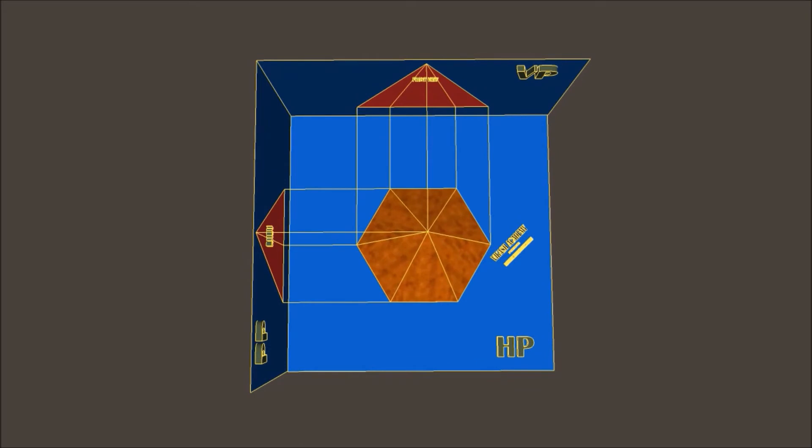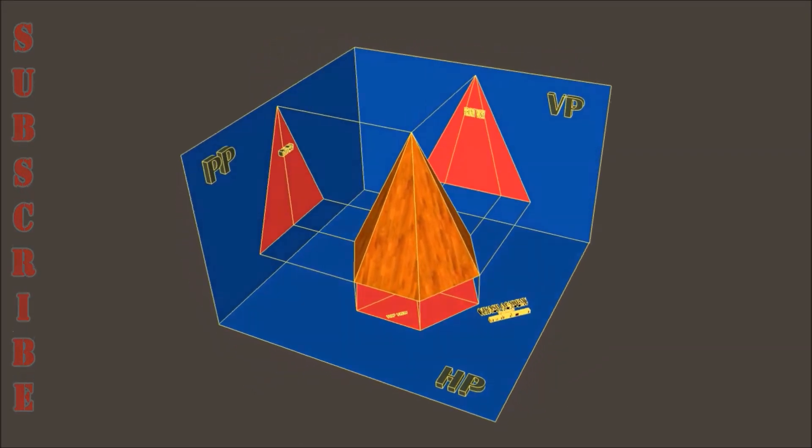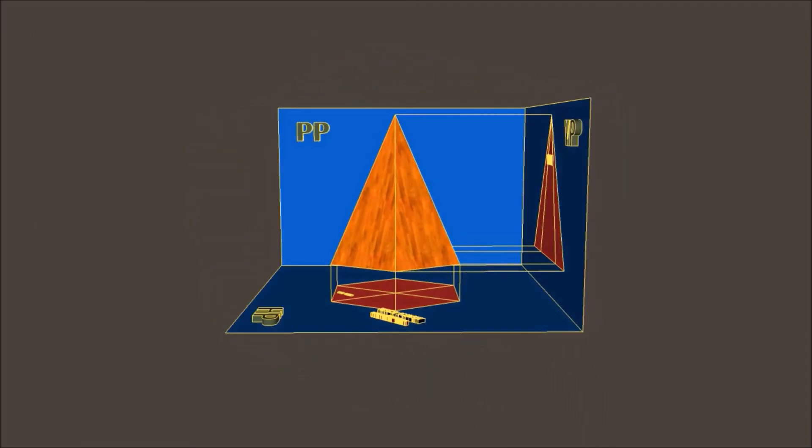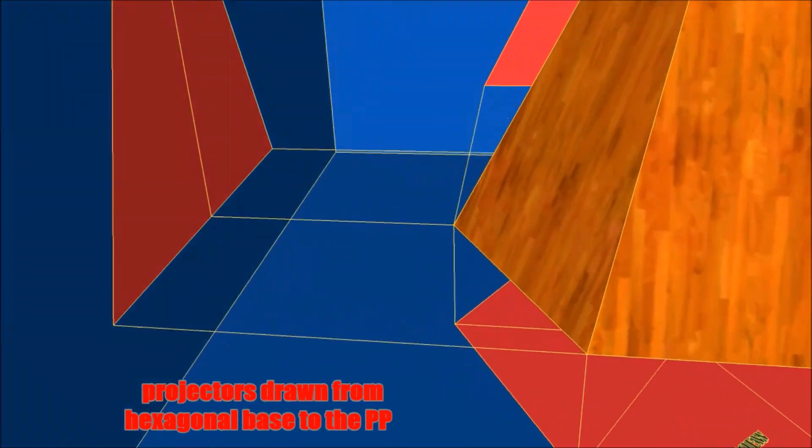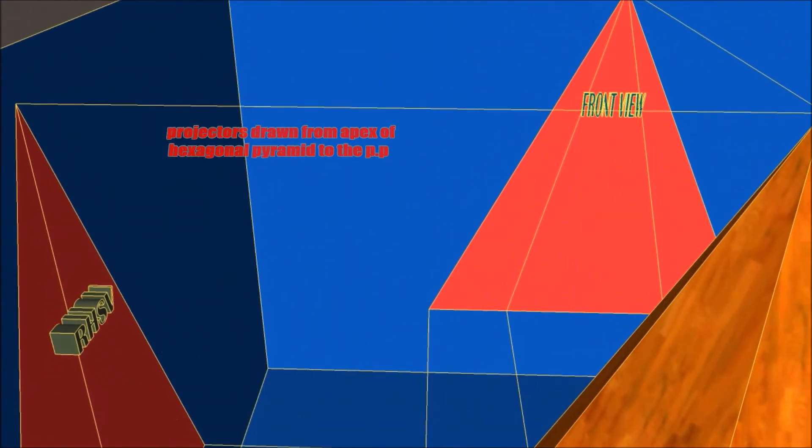When we look at this object, when we observe this object from this side, from the right side, we are again going to observe a triangle. This is due to the projectors drawn from the hexagonal base and also the apex of this pyramid.